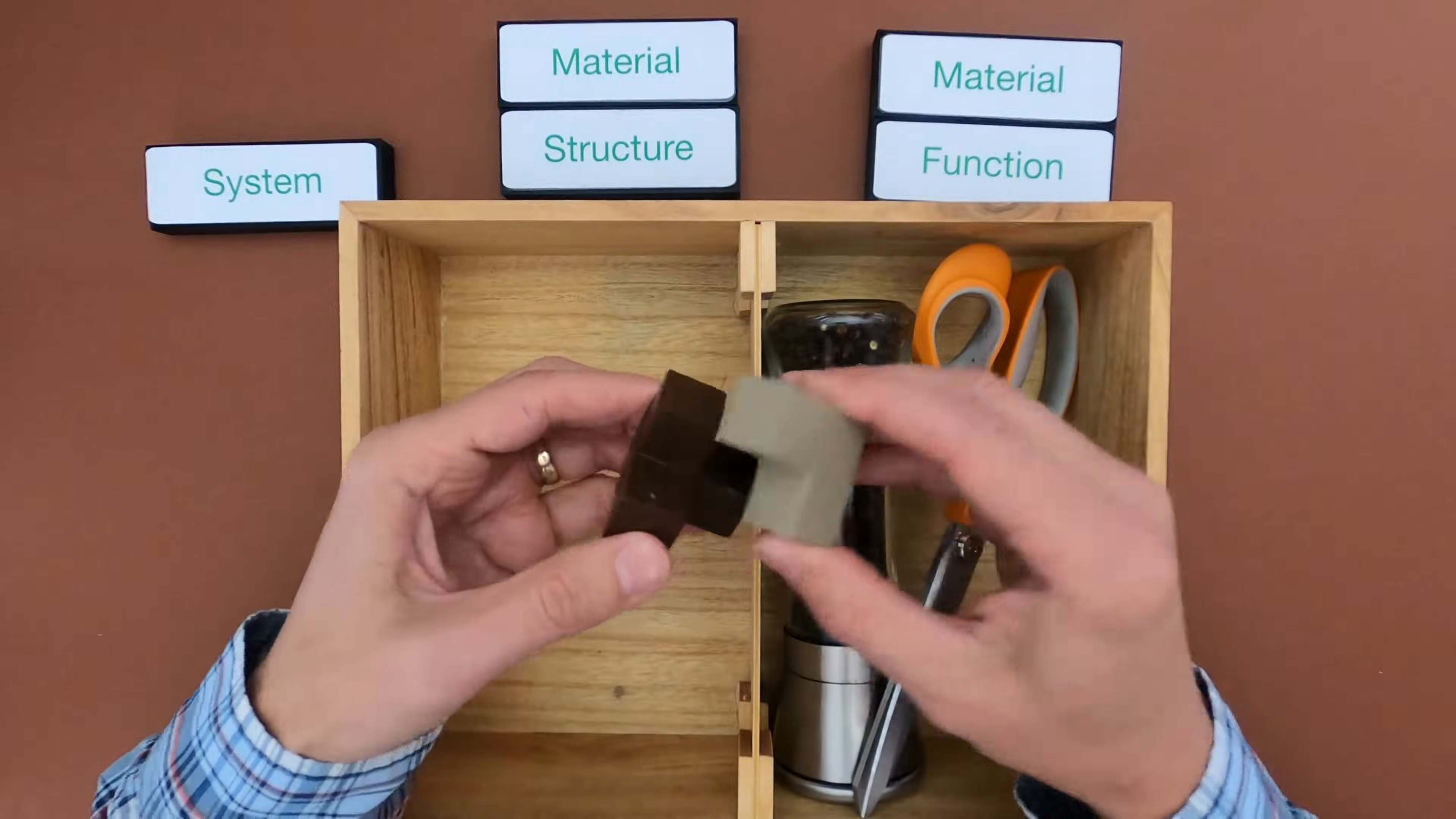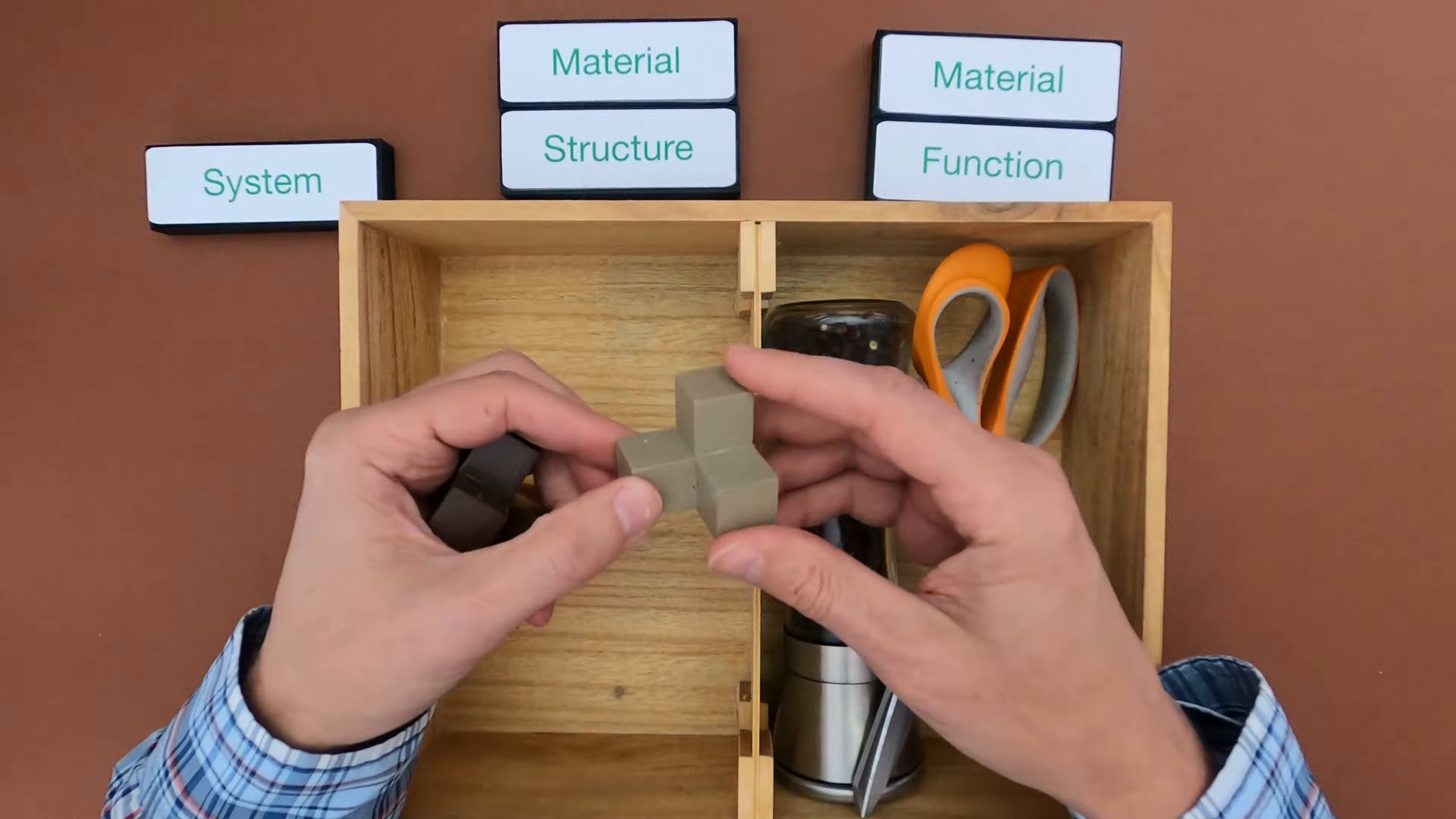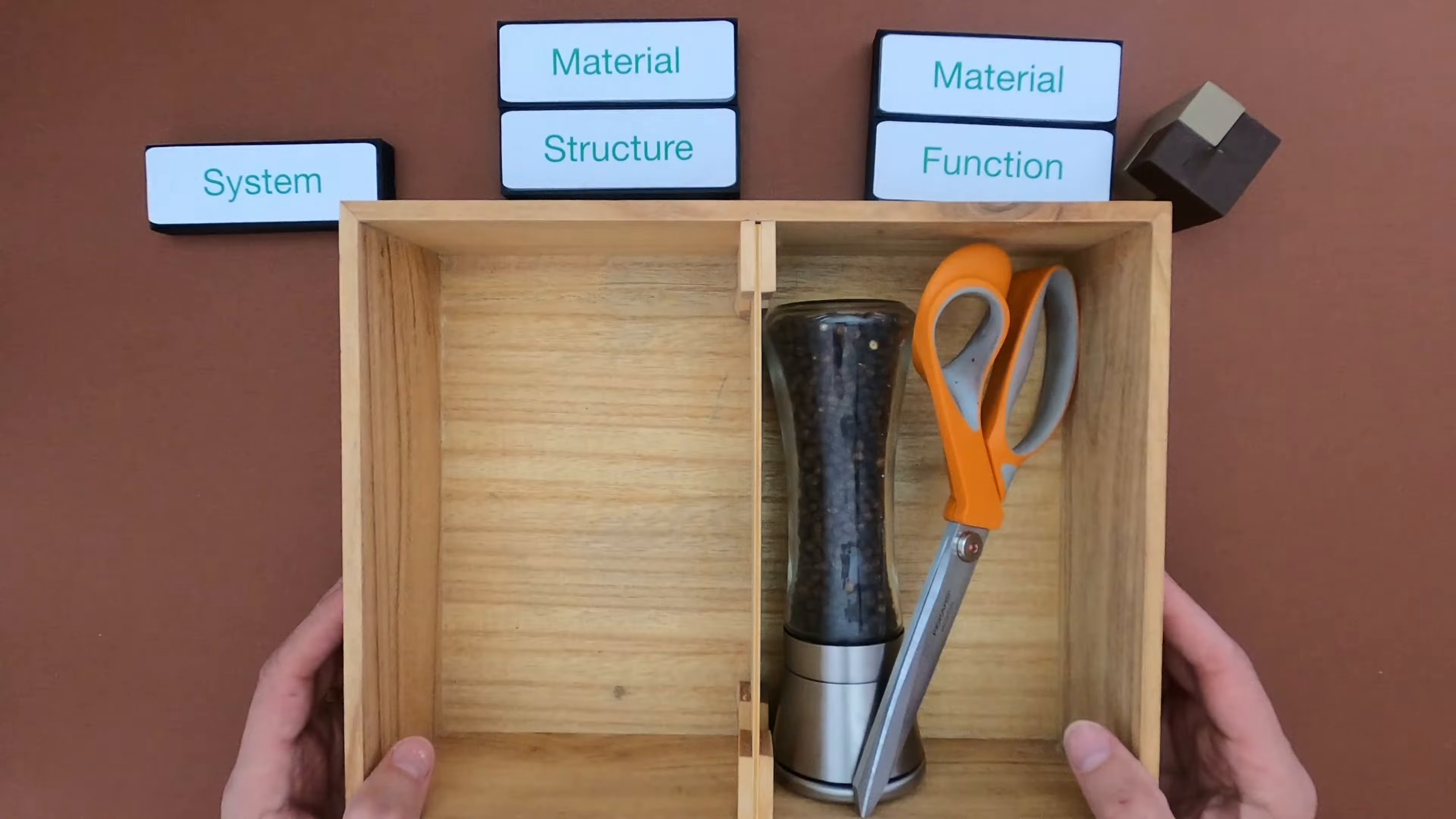Remember, the object that represents structure and function are these two wooden blocks because they show how structure depends on function and function is determined by the structure. But you always want to look at something new now with this lens of materials after watching this video. What is this made up of? What is the wood made up of? The paint? The magnet? What kind of material is it made up of? And how does that lend itself to the overall function of the structure itself?